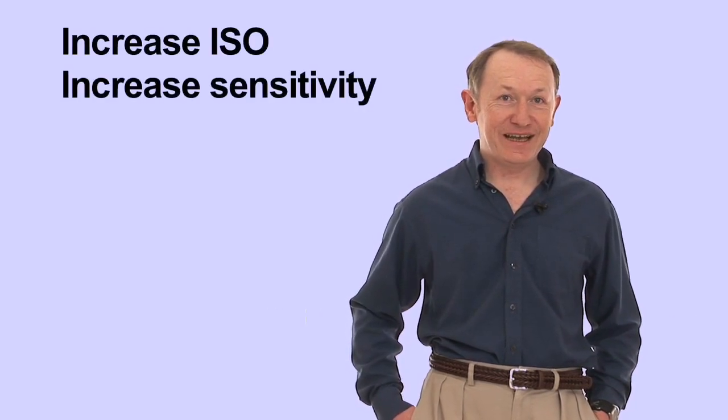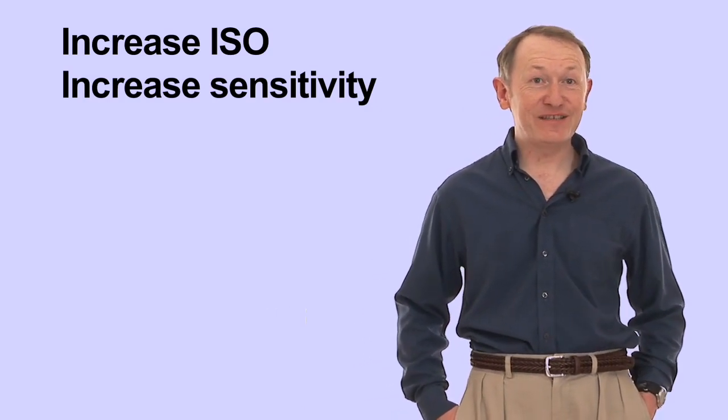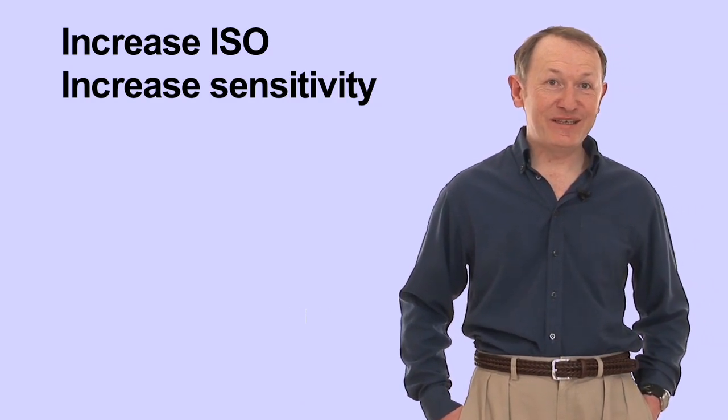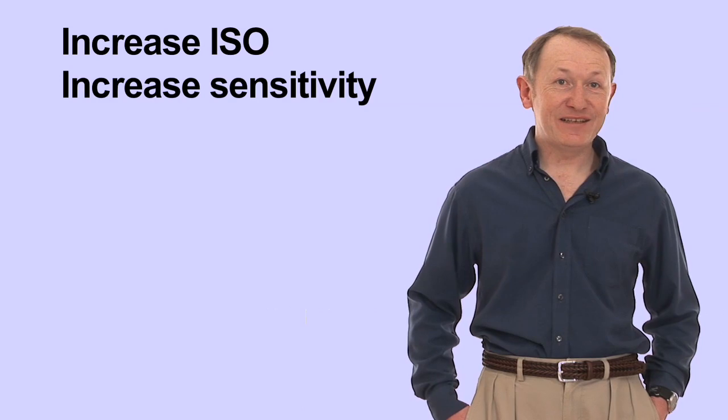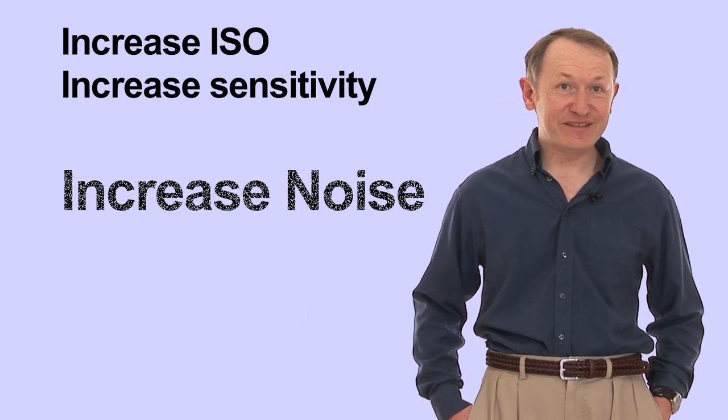I now want to talk about ISO. The ISO essentially refers to how sensitive the camera is to light. The higher the ISO number, the more sensitive the camera is to light and the faster the shutter speed. The disadvantage of increasing the sensitivity and the ISO is that the more sensitive the camera is to light, the more noisy the photographs get. In these two examples, I'll show you the difference between a low ISO and a high ISO.